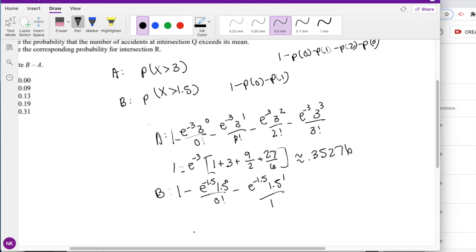I can simplify this to 1 minus e to the negative 1.5. 1.5 to the 0 is just 1, minus 1.5. I factor out the negative, so it's just going to be adding. This is approximately equal to 0.44217.